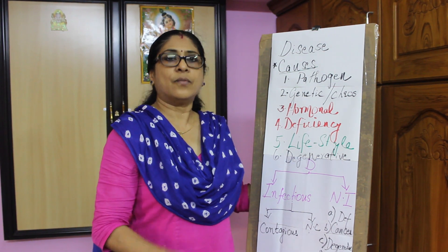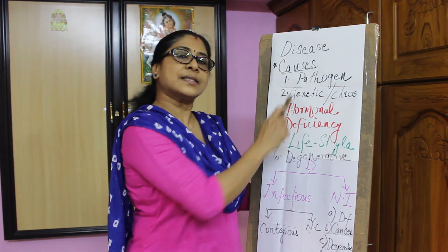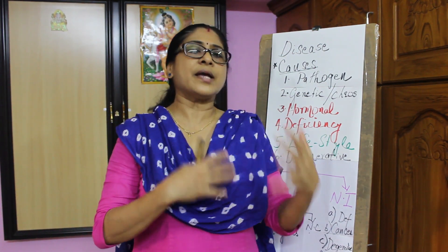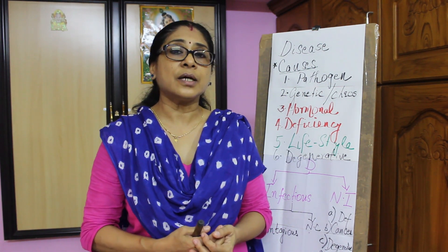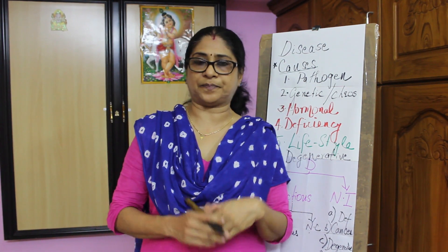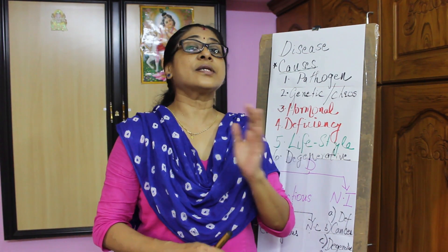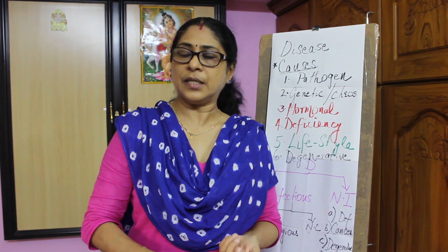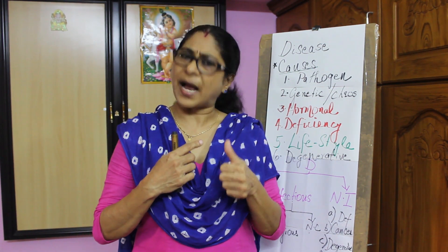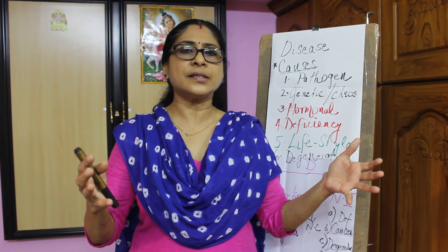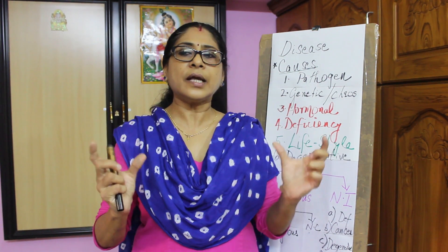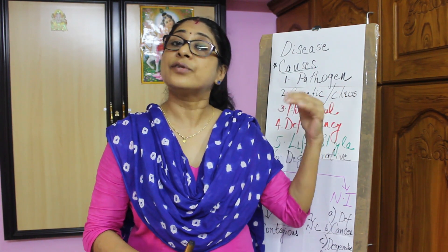Let us now discuss what are the different causes for diseases. The first cause is a pathogen. A disease causing organism is a pathogen. It can either be a bacteria, a virus, a fungi, a helminth, a bacteroid, a viroid, or a PPLO. Any of these organisms may enter into your body and cause a disease. Such disease causing organisms are broadly called as a pathogen, and that is the first reason for a disease.